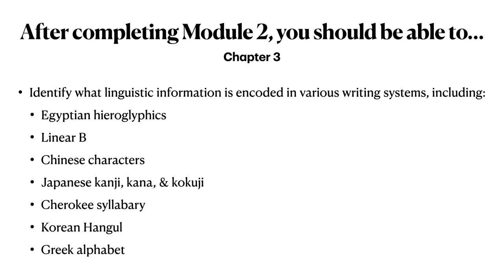Finally, after completing Module 2, you should be able to identify what types of linguistic information are encoded in various writing systems of the world. This includes Egyptian hieroglyphics, Linear B, Chinese characters, the Japanese writing system including Kanji, both types of Kana, and Kokuji, the Cherokee syllabary, Korean Hangul, and the Greek alphabet.